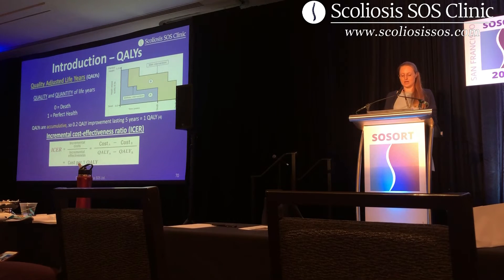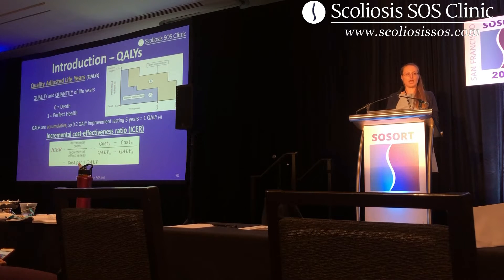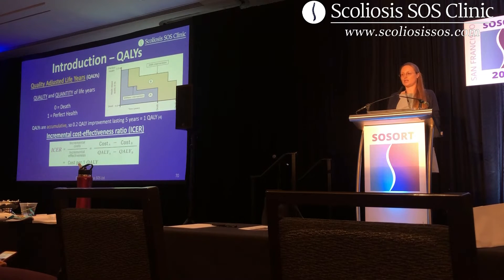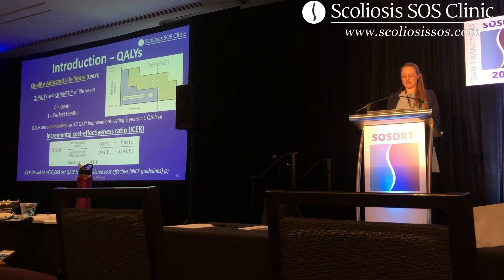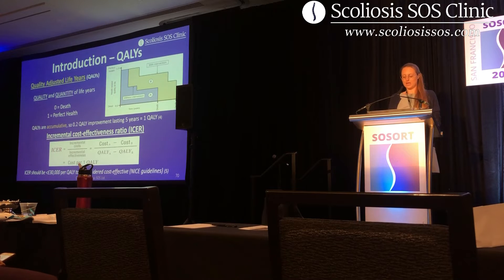The ICER is calculated as the difference in the expected costs of intervention A compared to intervention B, divided by the difference in the expected QALYs produced by intervention A and intervention B. Generally, it is considered that interventions costing the UK's National Health Service less than £30,000 per QALY gained are cost-effective.